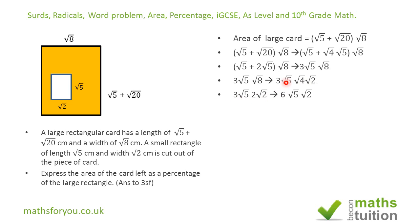So we have 3√5 times 2√2, and 2 times 3 = 6, giving us 6√5√2 for the area of the large rectangle. I'm keeping √5√2 in mind as I work through this.